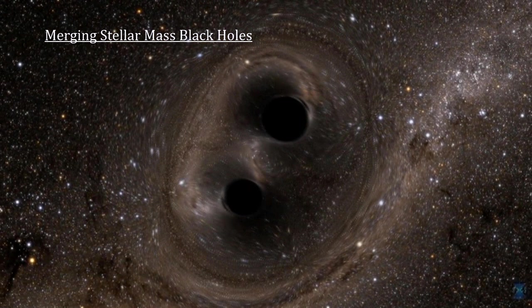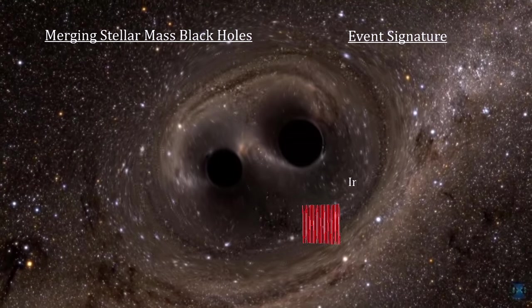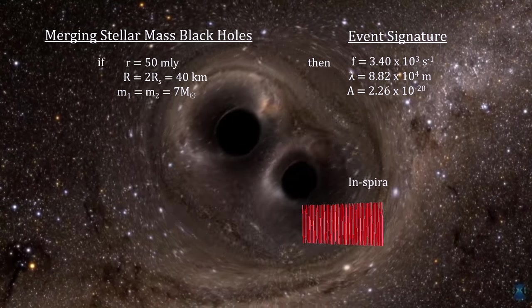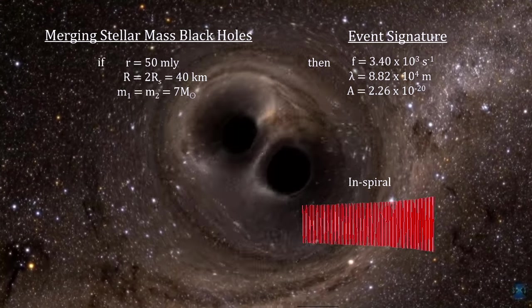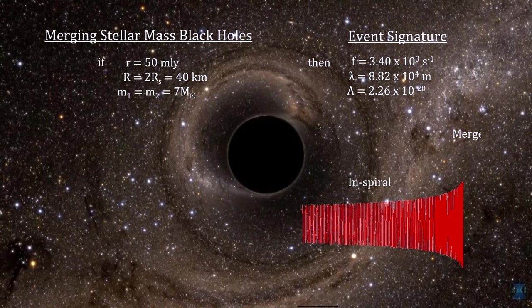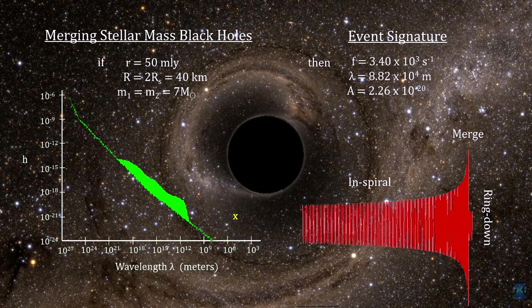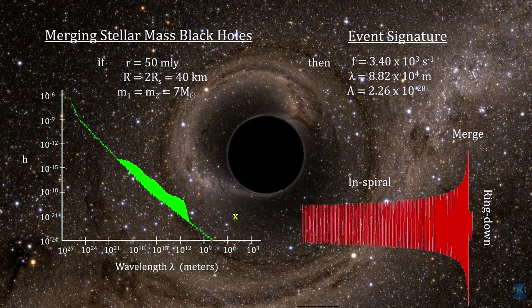Stellar mass black holes can't get as close as neutron stars because their Schwarzschild radius is larger than the radius of a neutron star. But their mass alone can create larger gravitational wave amplitudes. Here we see a black hole merger simulation. If each black hole has a mass of seven suns the Schwarzschild radius is 20 kilometers twice the radius of the neutron stars. As the orbital radius shrinks to twice the Schwarzschild radius and the black holes are approaching each other's photon sphere their velocities approach 70% of the speed of light. This produces a shorter gravitational wavelength and a larger amplitude putting this kind of event well into the theoretically detectable area.